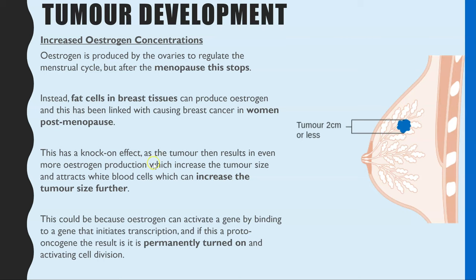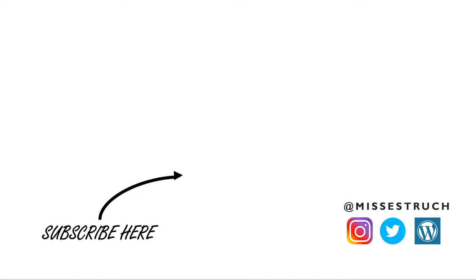A tumor itself can then result in even more estrogen being released, which causes the tumor to increase in size further. It also attracts white blood cells, and both of these factors increase tumor size at a faster rate. It is thought that estrogen activates a proto-oncogene by binding to a gene that initiates transcription, permanently turning it on and constantly producing the protein that activates cell division. Because there is an excess of estrogen in breast tissue after the menopause, this is why the tumor develops in the breast and grows rapidly.